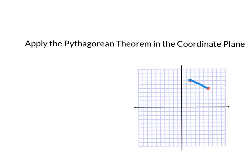It would be super easy if the segment was horizontal — you could just count across and say it's three long. Or if it was vertical, again super easy. But what if it's diagonal? That's what we're going to learn how to do today.